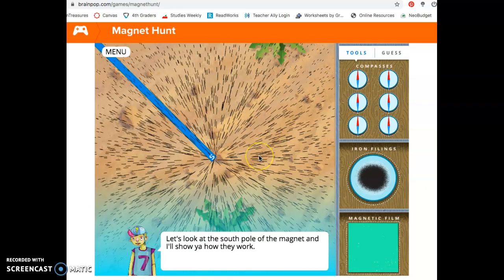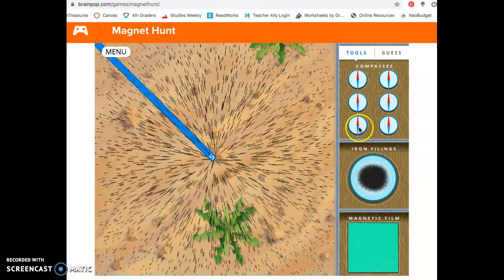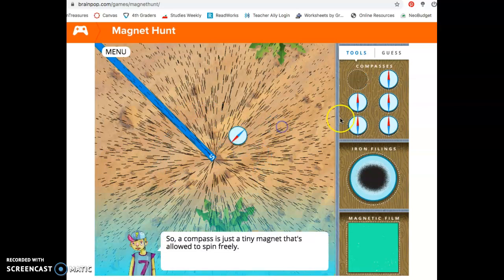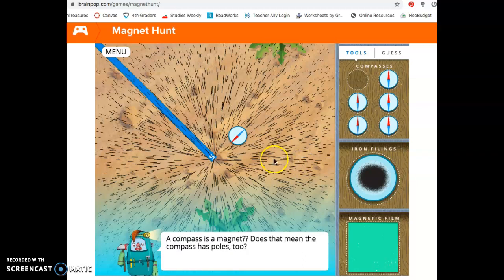Totally! There's a whole bunch of compasses. So let's look at the South Pole of the magnet and I'll show you how they work. Can you grab a compass for me? Sure! Okay, we're going to grab the compass there. Now here's what you need to look at. Do you see how as I move it around the screen, the red part points to the South Pole. So a compass is just a tiny magnet that's allowed to spin freely. A compass is a magnet? Does that mean the compass has poles too? Yeah, it does! The North Pole is red and the South Pole is blue. Take a look! Which pole the compass is pointing at our magnet? Hmm, the red side. So that means the North Pole! Right!